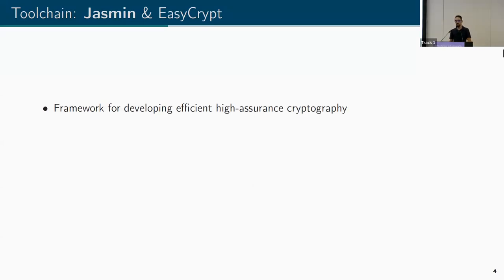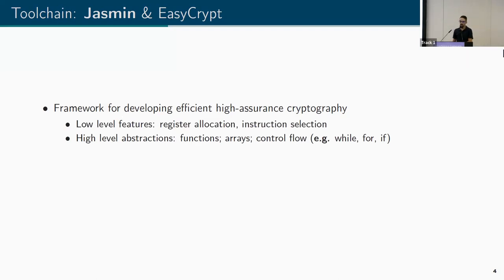We use two tools to accomplish this task: Jasmine and EasyCrypt. Jasmine is a framework for developing efficient high-assurance cryptography. Efficiency is achieved through low-level features you'd get in assembly — such as the ability to allocate registers and directly select the instruction the compiler produces. Unlike assembly, we also get higher-level features like functions, arrays, and control flow structures including while loops, for loops, and if clauses. Note that for loops are an abstraction that gets unrolled at compile time, so they have no overhead.